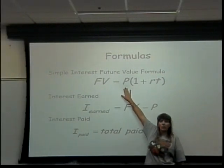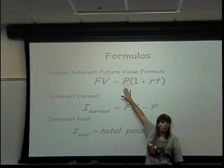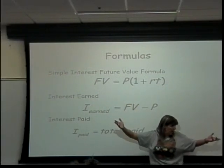P is the amount of money you put in. It's also referred to as principal and also referred to as present value. That's how much money you have now.